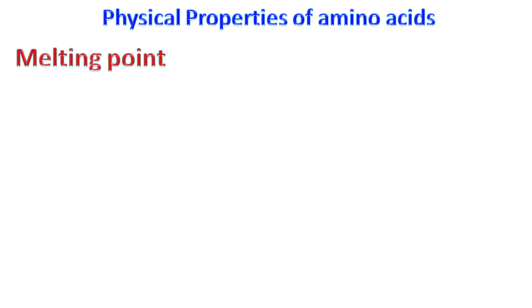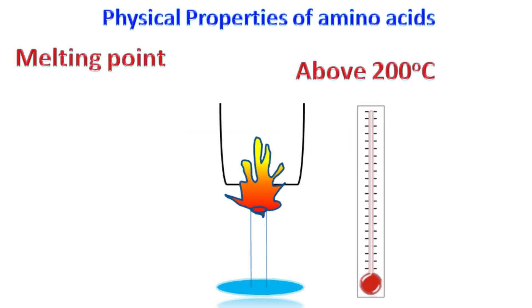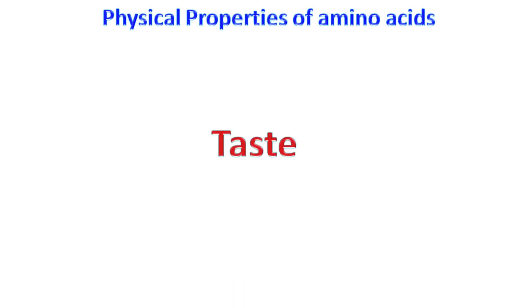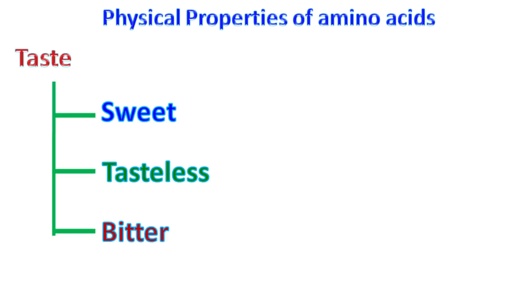Melting point: most of the amino acids have a melting point above 200 degrees Celsius. Amino acids can be sweet, tasteless, or bitter.